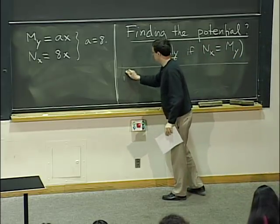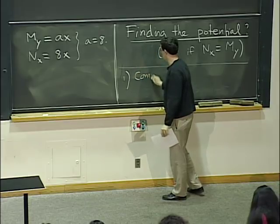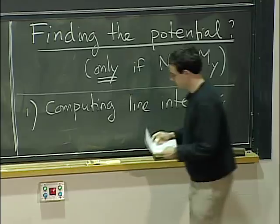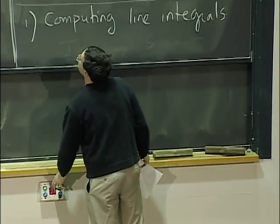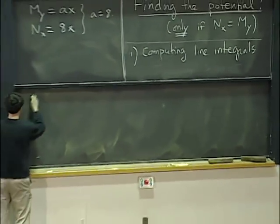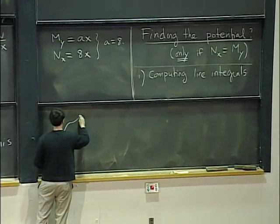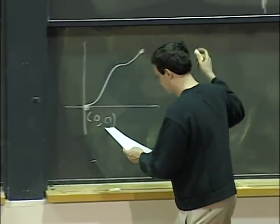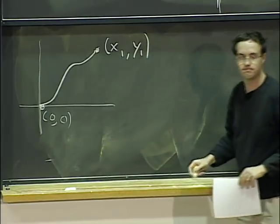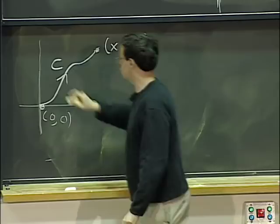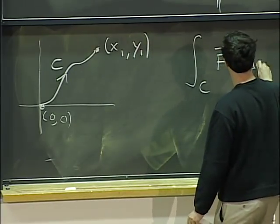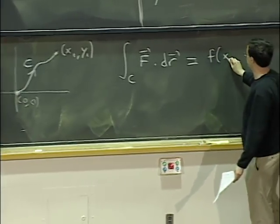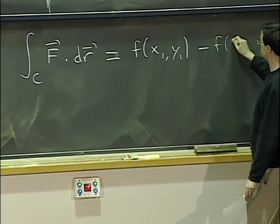The next stage is finding the potential. We can only do that if step one was successful — if we have a vector field that cannot possibly be a gradient, we shouldn't try to look for a potential. There are two methods. The first method is by computing line integrals. Let's see how that works. Take some path starting at the origin and going to a point with coordinates x1, y1. Compute the line integral of the field along the curve, which by the fundamental theorem equals the value of the potential at the end point minus the value at the origin.